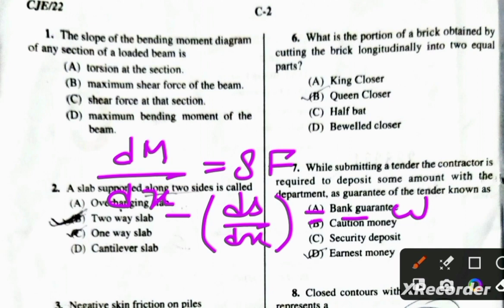Additionally, the negative slope of the shear force diagram at any section is equal to the load intensity at that section. So option C is the correct answer.